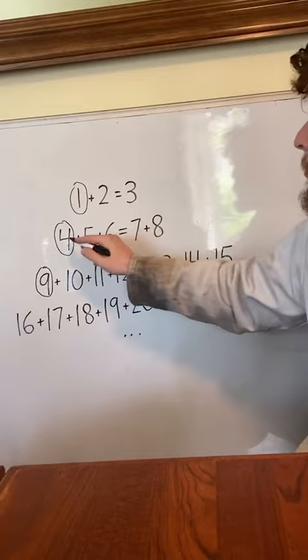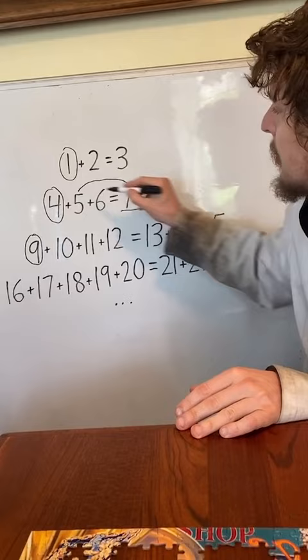This side has one number that's 2 more than that, and one number that's 2 more than that. 2 times 2 is 4, the difference.